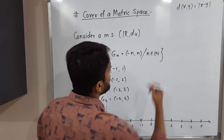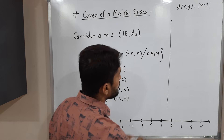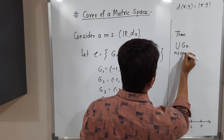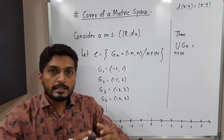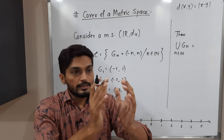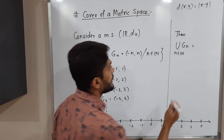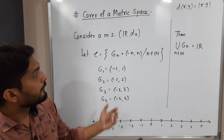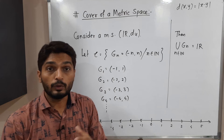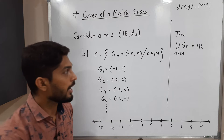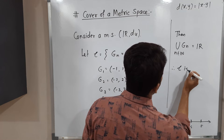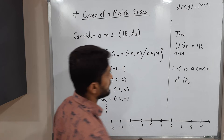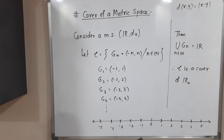The union of G_n, N belongs to the set of natural numbers, is nothing but the entire real line. So these sets, their union covers the entire real line — that is equal to R. So therefore, we have a collection of subsets of R such that their union covers R, and therefore script C is a cover of R with the usual metric. This is the definition of the concept of cover of a metric space.